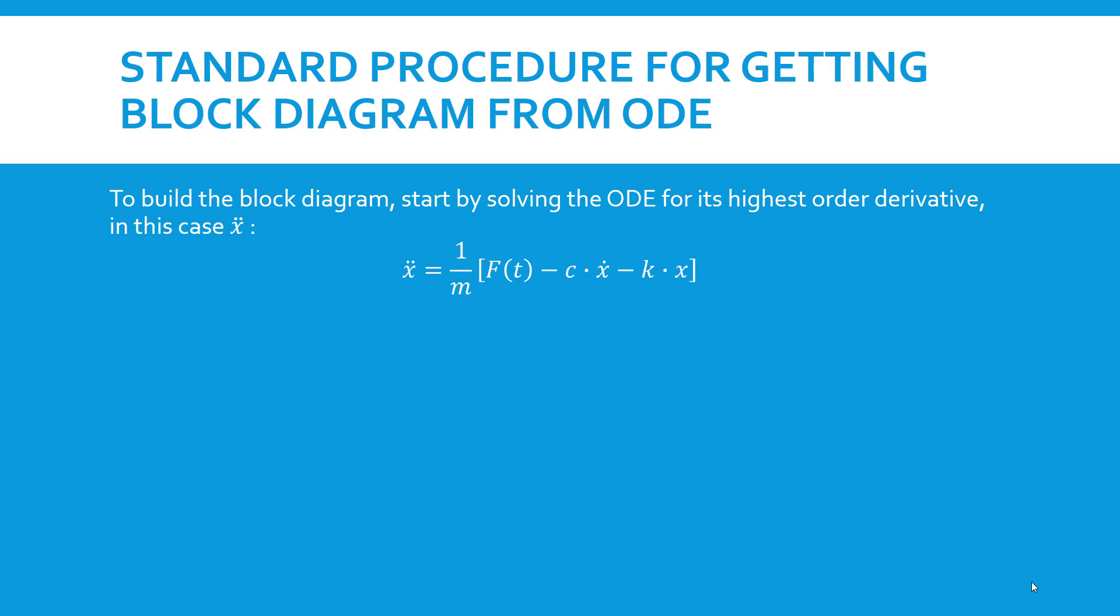The first step in the procedure is to solve the equation for the highest order of derivative in it. In this case it's a second order system, so we solve the equation for x double dot. If we analyze the equation we have two levels of integration: we integrate from x double dot to x dot and then to x. All three of these quantities play a role in the system.